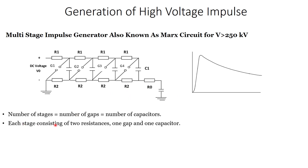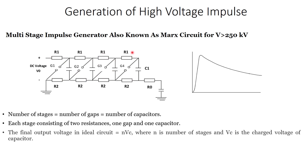Each stage consists of two resistances, one gap, and one capacitor. In the first stage we have resistance R1 and R2, gap G1, and capacitor C1 — one capacitor, one gap, and two resistances. This is the first stage. Similarly, the following parts constitute the second, third, and fourth stages.